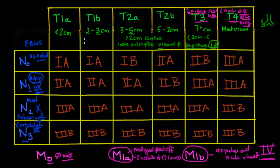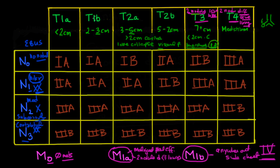Let's talk about staging. Remember what we said: there was a T staging, an N staging, and an M staging. We did T1A, T1B, all the way to T4 and their criteria. And we did the N staging and all of their criteria.